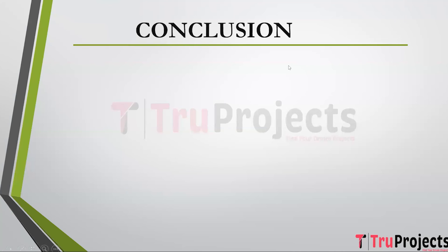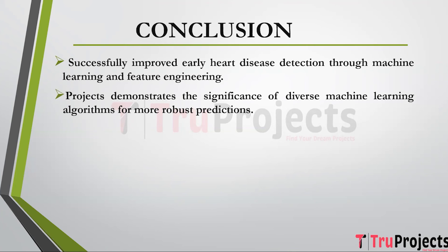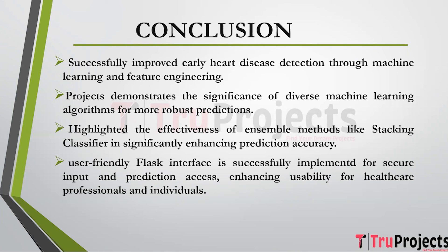Conclusion: The project successfully enhances the early detection of heart disease through the application of machine learning algorithms and effective feature engineering techniques, potentially leading to better patient outcomes and reduced healthcare costs. By employing a variety of machine learning algorithms, the project demonstrates the importance of algorithm diversity in achieving accurate predictions. The utilization of ensemble methods such as the stacking classifier highlights the power of combining multiple model predictions, significantly enhancing accuracy and reliability. The Flask framework integration provides a user-friendly interface for individuals to securely input health data and access predictions.